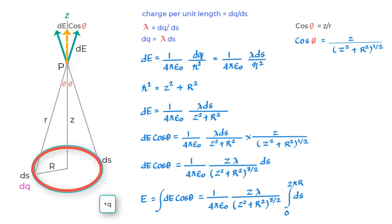What we are doing here is using integral calculus to account for the electric field due to all charge elements DQ on the ring and summing them up. So we say that the total electric field is integral of DE cos theta which equals Z lambda upon 4πε₀ Z square plus R square to the power 3/2 integral of DS as it changes from 0 to 2πR.